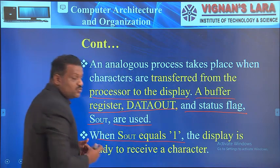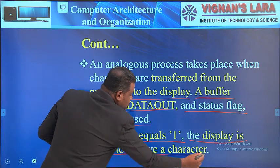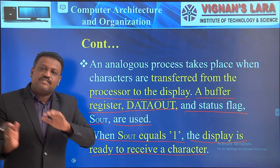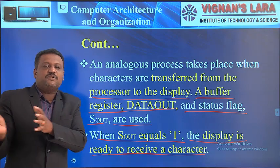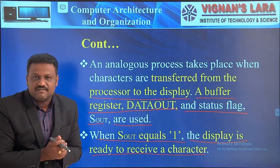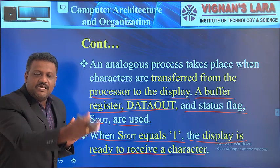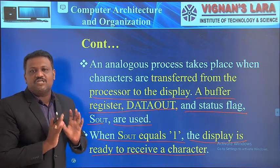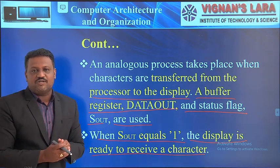When S-out equals 1, the display device or output device is ready to receive the character from the processor. Whenever the processor wants to send data to an output device, it verifies the S-out bit. If S-out is set to 1, the processor transfers the data, which is then stored in the data-out register of the output device.